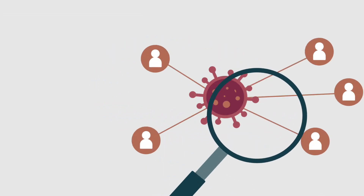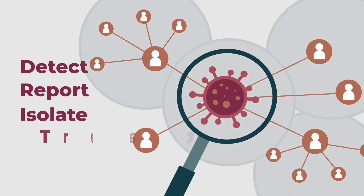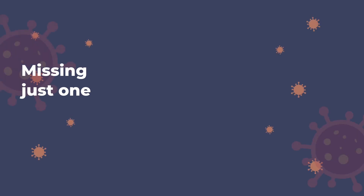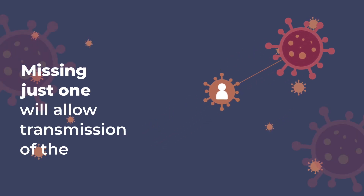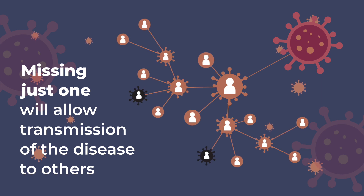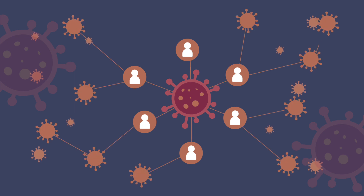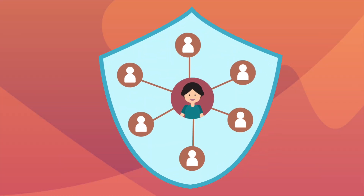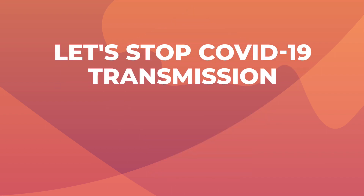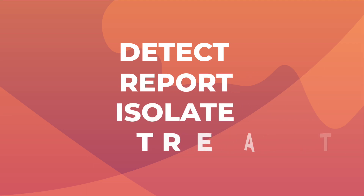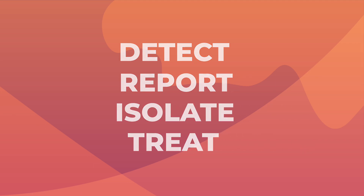Contact tracing aims to detect, report, isolate, and treat cases quickly to prevent the spread of infection to others. Missing even just one case from close contacts will allow transmission of the disease to others, resulting in more cases and lives lost. Contact tracing is an important public health intervention to effectively prevent large-scale community transmission. Let's stop COVID-19 transmission now — detect, report, isolate, and treat. It is our most urgent action today.